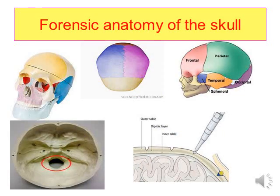The forensic anatomy of the skull: the skull is composed of the vault and the base. The base has multiple foramina, the most important being the foramen magnum. The skull is an example of a flat bone, composed of outer table, inner table, and the diploic layer in between.